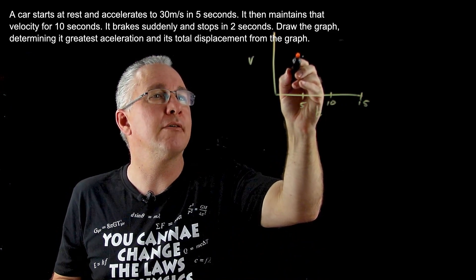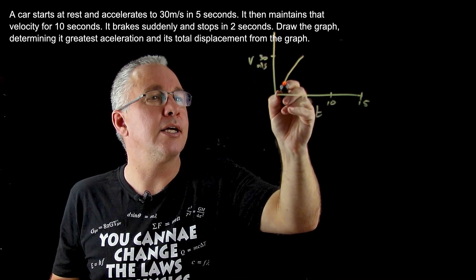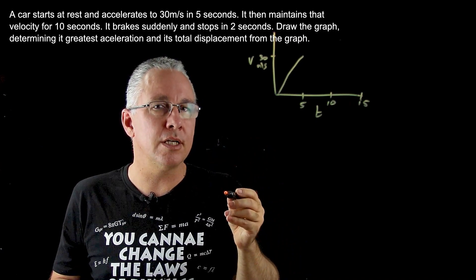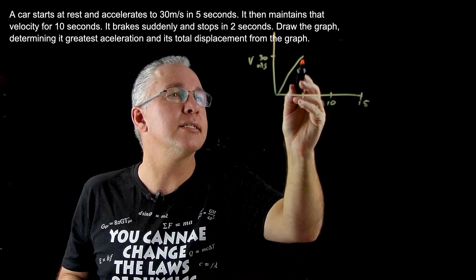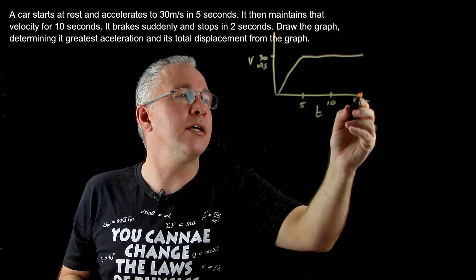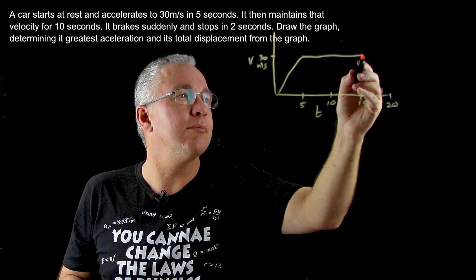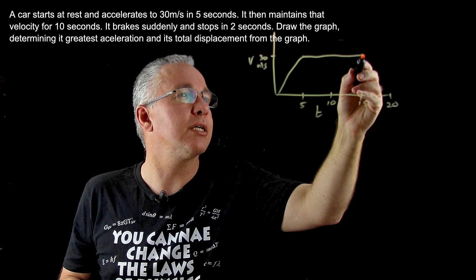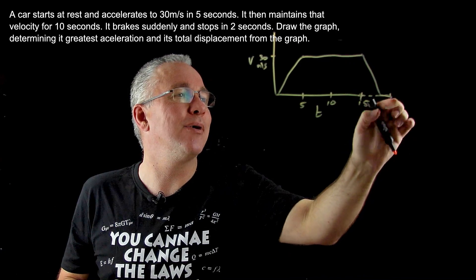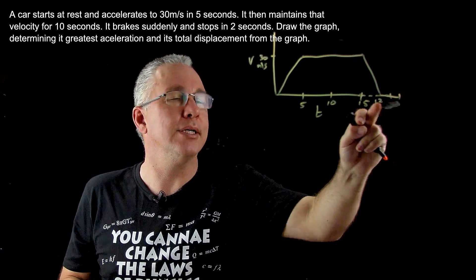I'm going to put my 30 mark right there - 30 meters per second. It's going to travel at a constant velocity for another 10 seconds after that. Then it comes to a stop within two seconds, so it's going to go like this. You can probably work out that this is going to be 12 at that particular point in time.